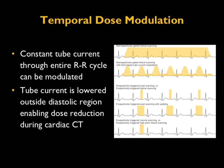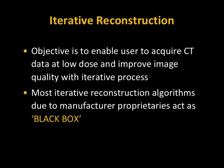Conceptually, one can appreciate the dose savings from the top panel to the bottom panel: in retrospectively gated helical scanning, radiation exposure occurs throughout multiple heartbeats, while in the last panel, acquisition occurs in only one heartbeat and only during a limited portion of the diastolic phase. Iterative reconstruction can be thought of as enabling users to acquire CT data at low dose and improve image quality through an iterative mathematical process, though the details are kept proprietary by manufacturers.